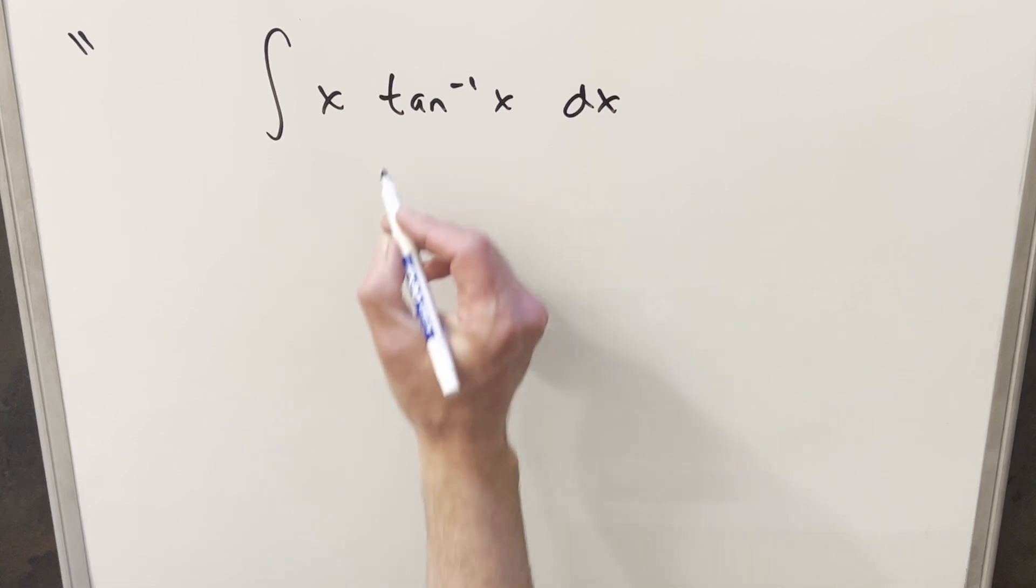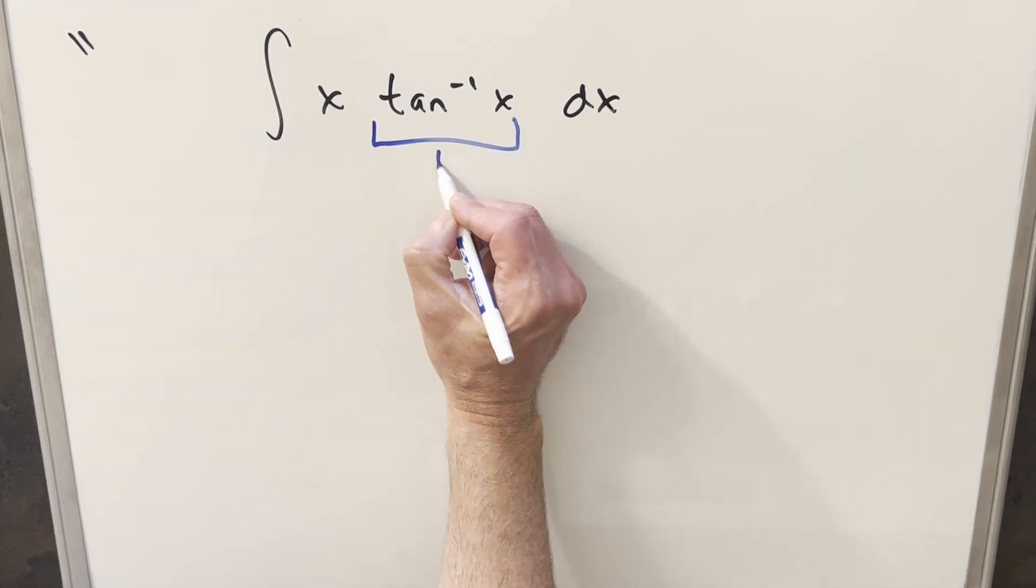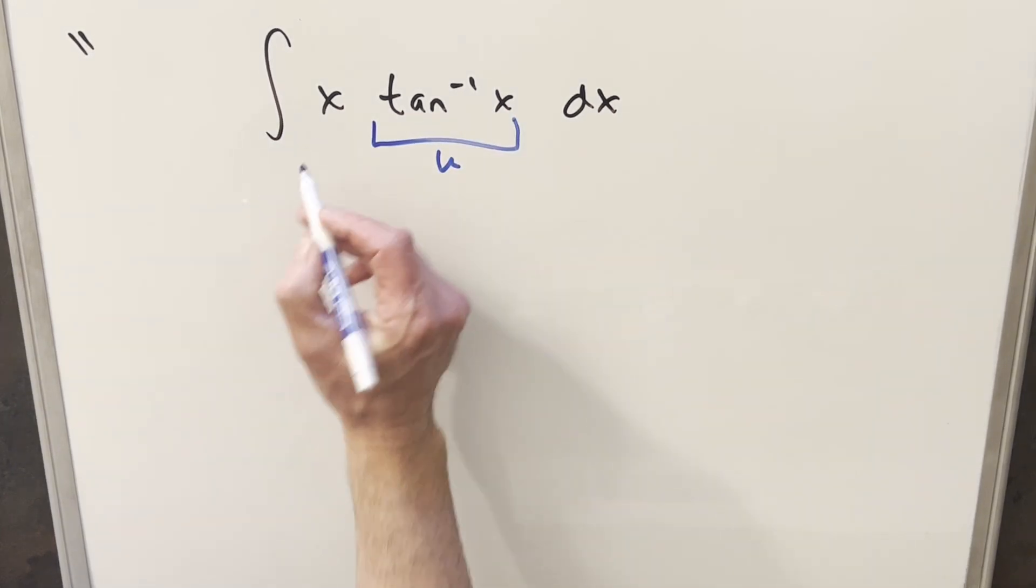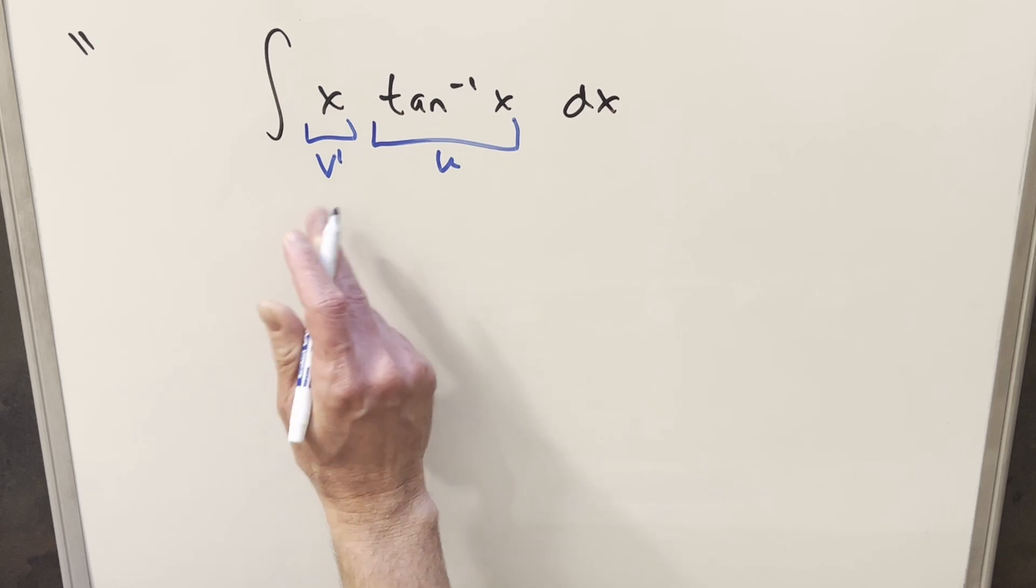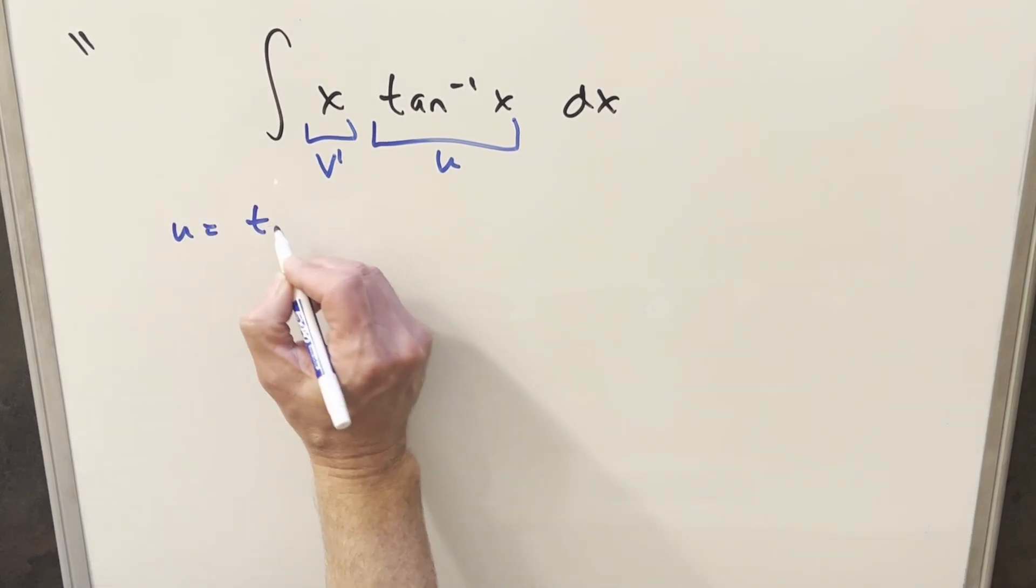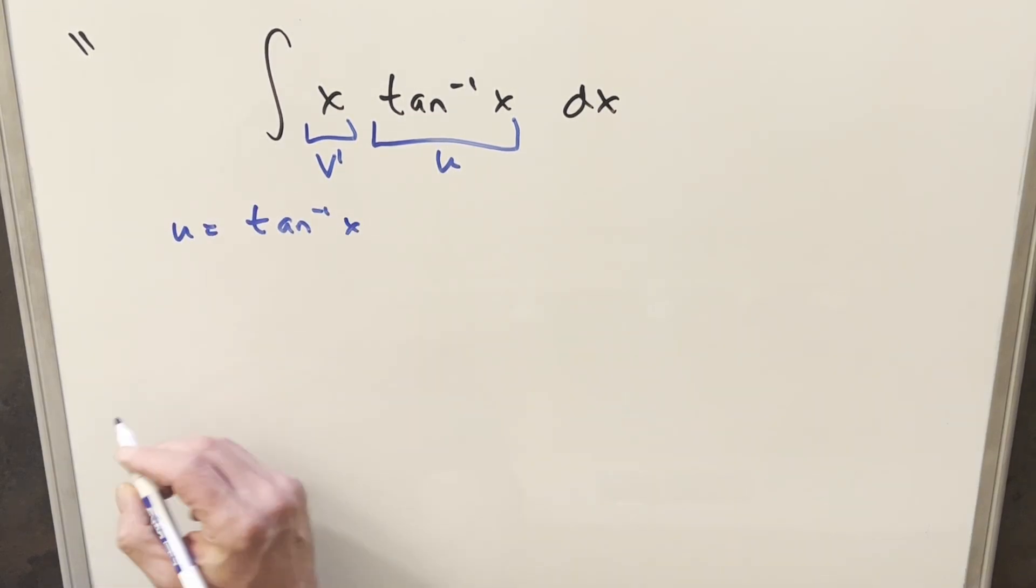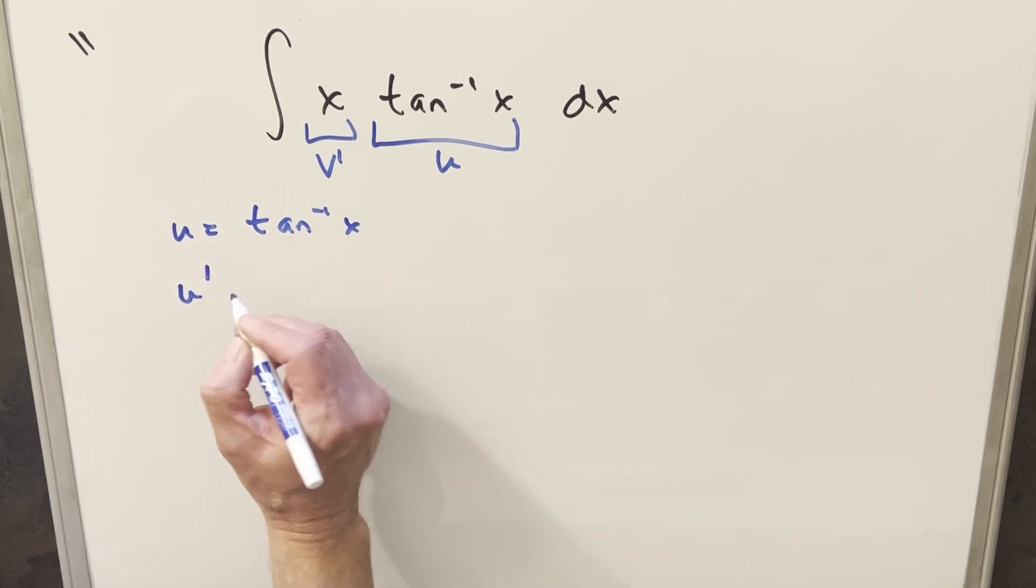So now back to our problem, we'll do integration by parts on this, and I'm going to make, I'm going to call this my u to differentiate this, and I'm going to call this my v prime in order to integrate that. So we're going to have u just equal to arctan of x. I'll take a derivative here, so our u prime value.